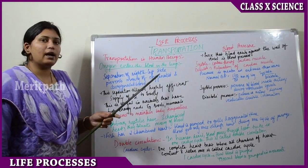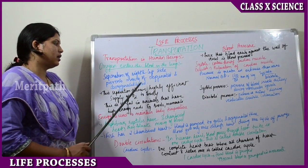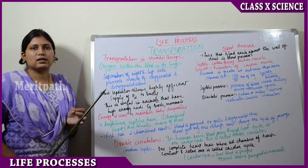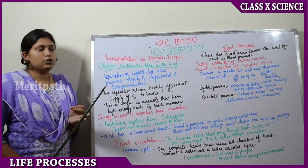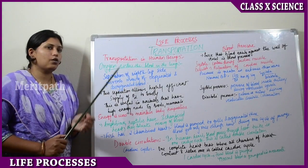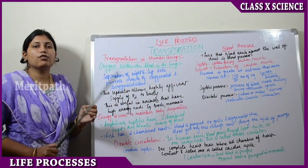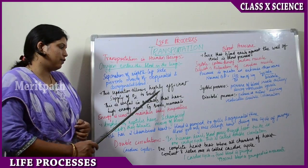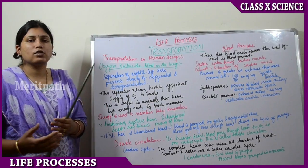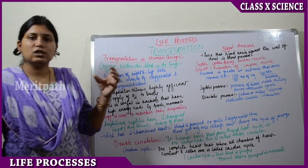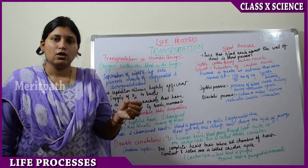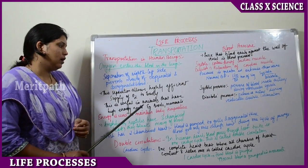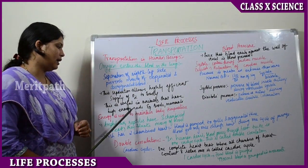The separation of the right and left side of the heart prevents the mixing of oxygenated and deoxygenated blood. This separation is highly efficient for the supply of oxygen to the body, as the oxygenated blood, which is rich in oxygen, supplies lots of oxygen to the body.